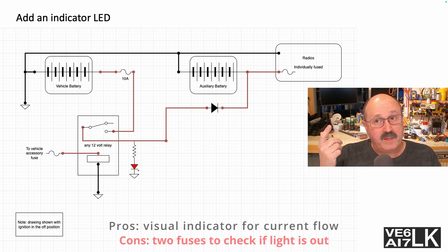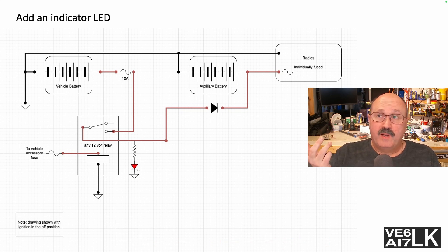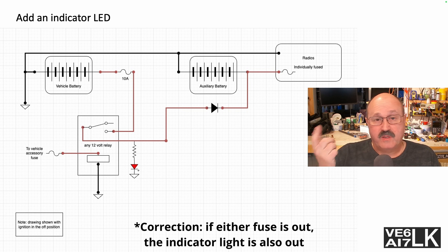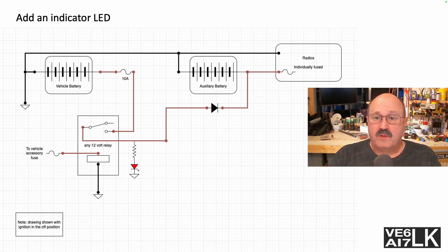Now if the fuse is blown—the 10-amp fuse in the upper left corner—if it's blown, that LED is not going to be on. The relay is still going to work because the accessory line goes... or maybe the indicator won't come on if the accessory fuse is blown. So now you've got two places to look, but that's not that big a deal when you stop to think of it.